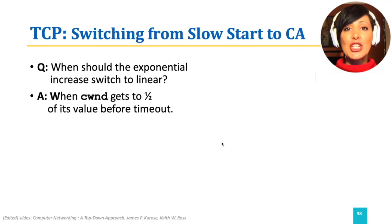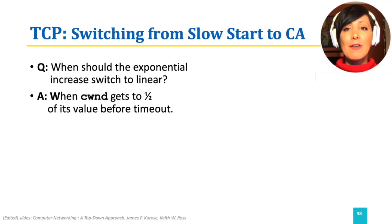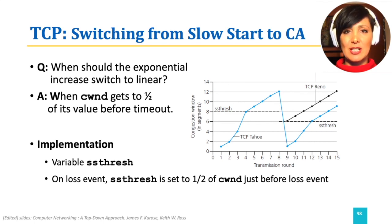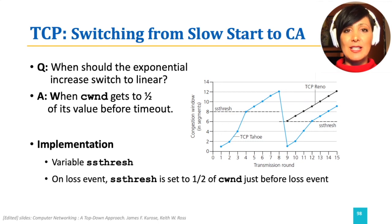Congestion avoidance changes the increase pattern in the window size from exponential to linear. The switch to congestion avoidance happens when the congestion window reaches half of its value before a timeout — this is a good threshold. This threshold is named SS threshold, which stands for slow start threshold, and is continuously updated to half of the congestion window size before the last congestion event. This changes the sawtooth shape of the window size to add a milder slope after the slow start threshold.